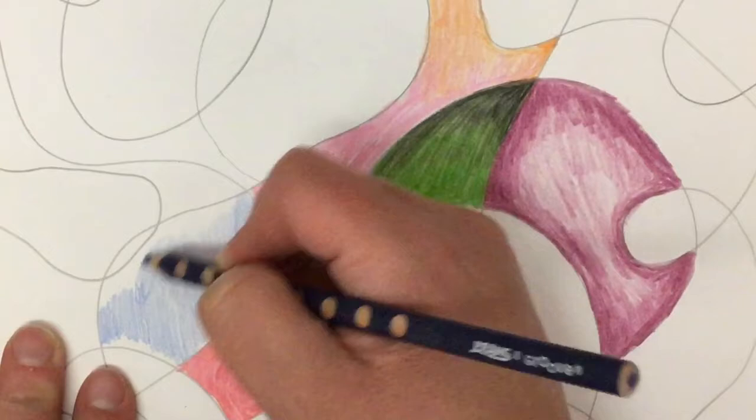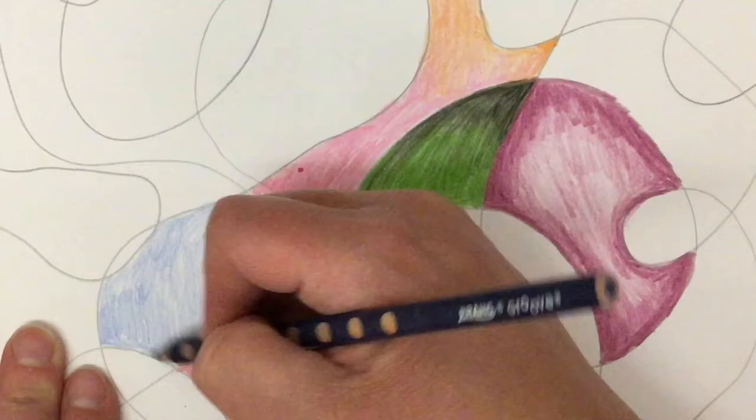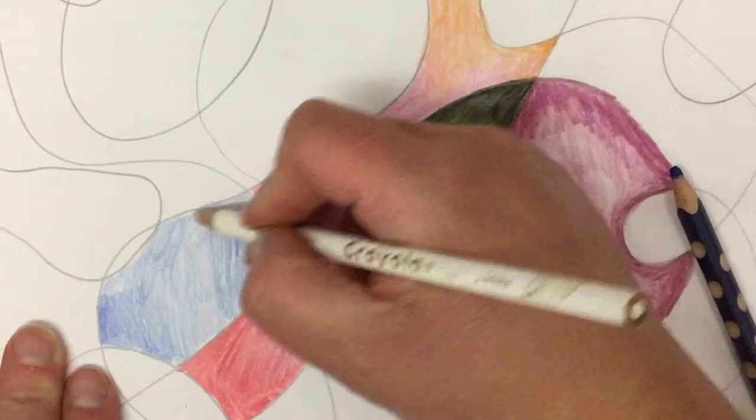Because I know that that white is going to be hard to show up on here. But the good thing is we have white paper. So that works to our advantage because it kind of peeks through. And we can use that for some of our shading.